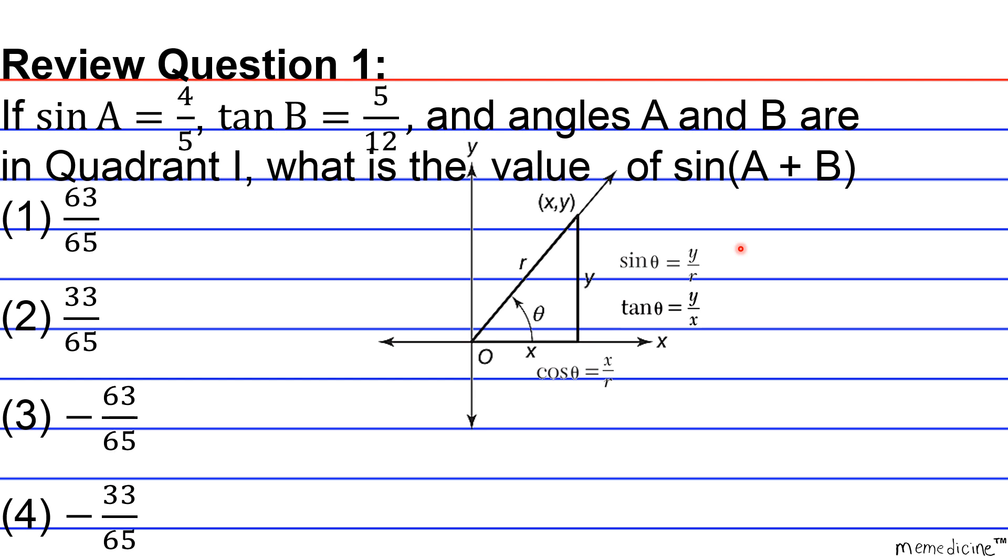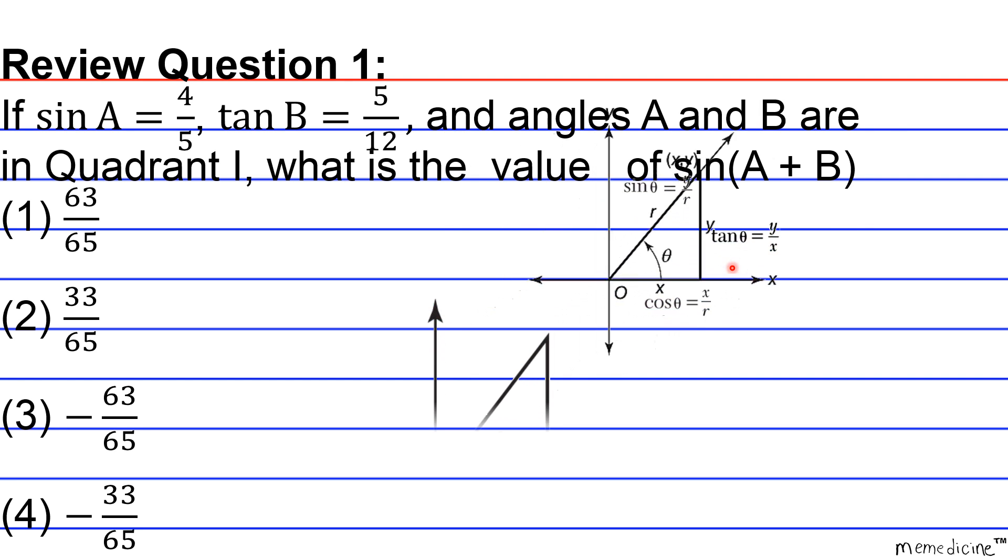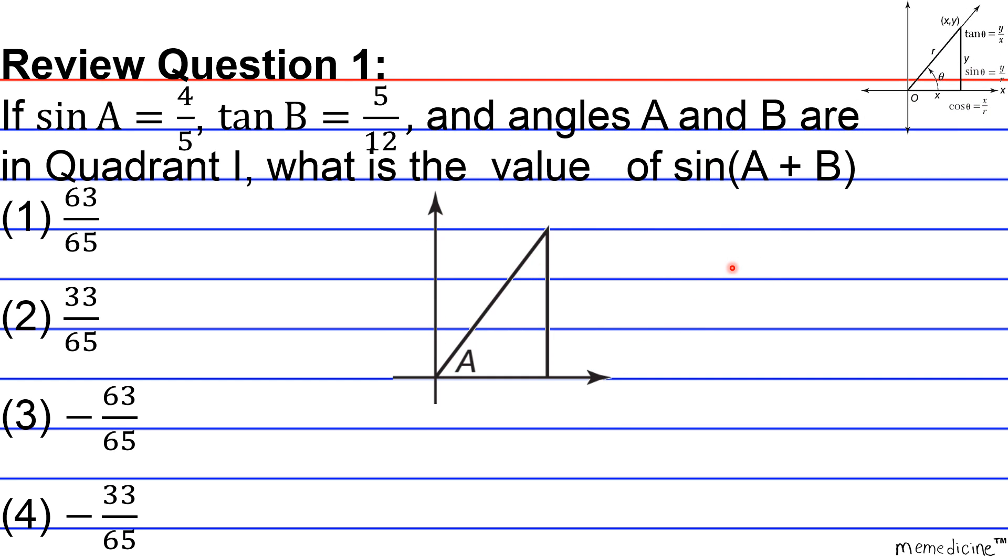All right, so the sine of A plus B can be found using the angle sum formula. So that's what we're going to do. But before we do that, we're going to label our triangle so we can have a better visual of what we're doing.